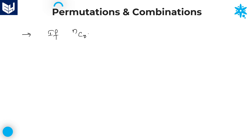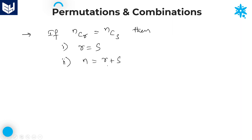There are a few more important points. If nCr is equal to nCs, then either r is equal to S, or else n is equal to r plus S. Based on the requirement given in the problem, we can choose either condition.